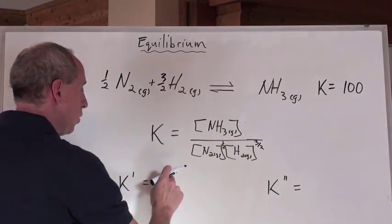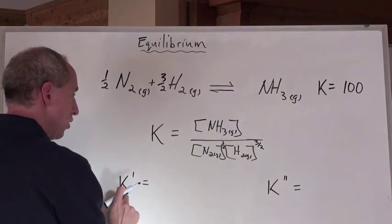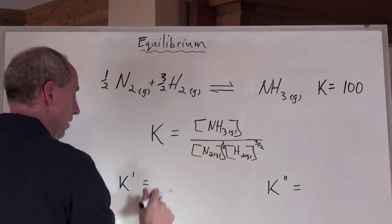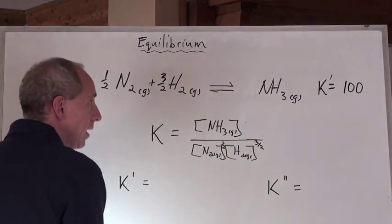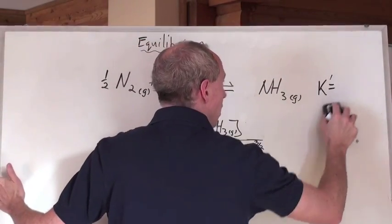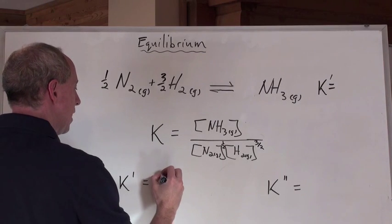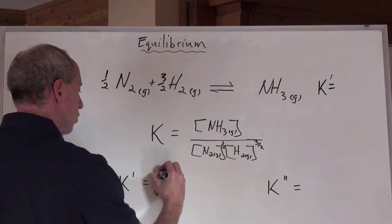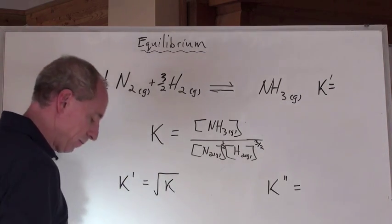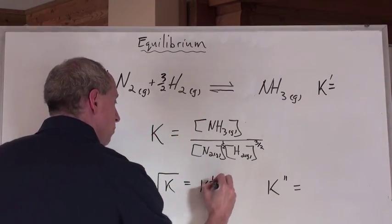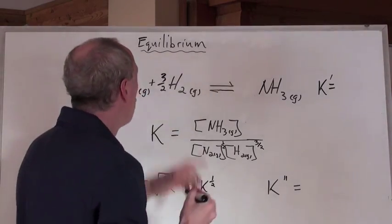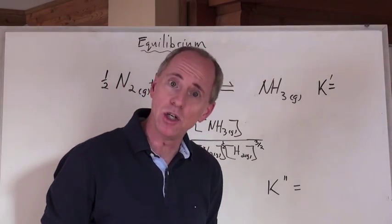And so here is the relationship. The relationship between this K here and the new K, which is going to be for this here, is this. This K prime for this reaction right here is, now it used to be a hundred, that's what the K value is, it's going to be the square root of K. So the square root is just to the, it's the same as saying K to the one half power. So now, look, what we did was we divided the equation by two.